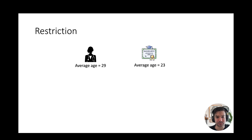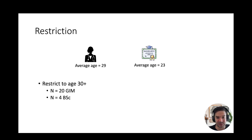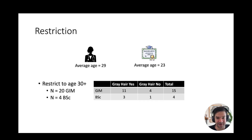Another approach is restriction. Typically you're restricting the population to above or below a certain age. In this toy example, the average age of a BSc grad was 23 and of a GIM grad was 29. When we restrict — say, to everyone aged 30 or older — our sample size shrinks because very few people finished their Bachelor's degree at 30 or higher. Now we can calculate how often gray hair occurred, and we see it's the same. This illustrates how restriction can help adjust for confounders.